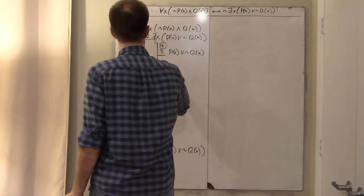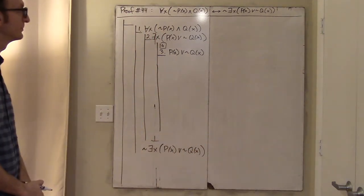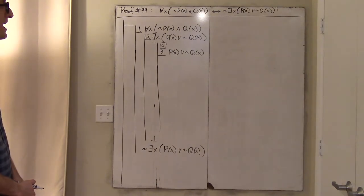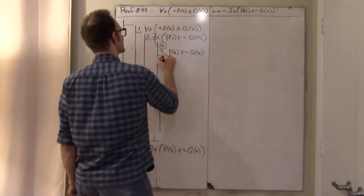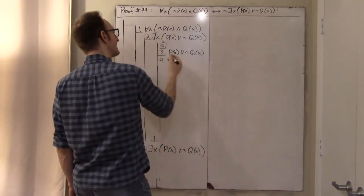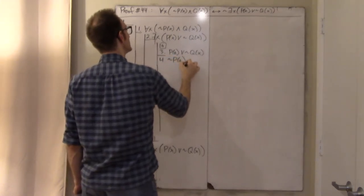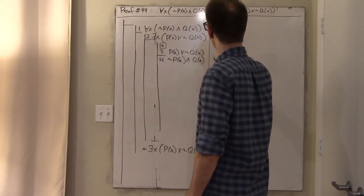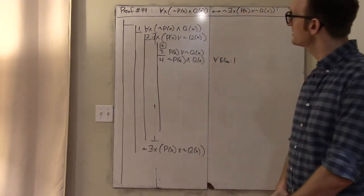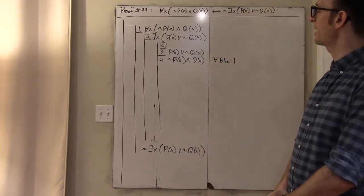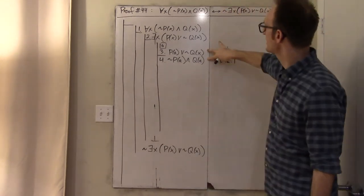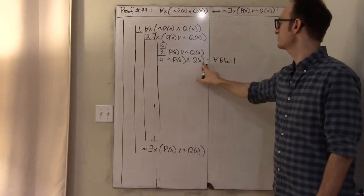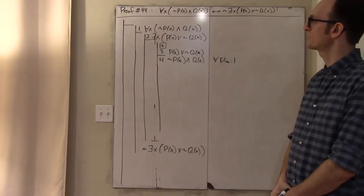I want to show that this is contradictory. Line one tells me everyone has a certain property, so the obvious thing to do is stick A in for x. We get not p of A and q of A — universal elimination on line one. Now we're back down at the level of propositional logic, and these two are clearly contradictory.